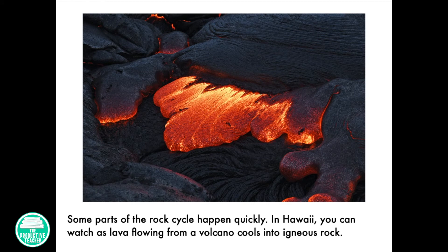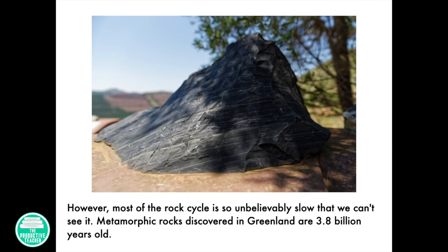Some parts of the rock cycle happen quickly. In Hawaii, you can watch as lava flowing from a volcano cools into an igneous rock. However, most of the rock cycle is so unbelievably slow that we can't see it.